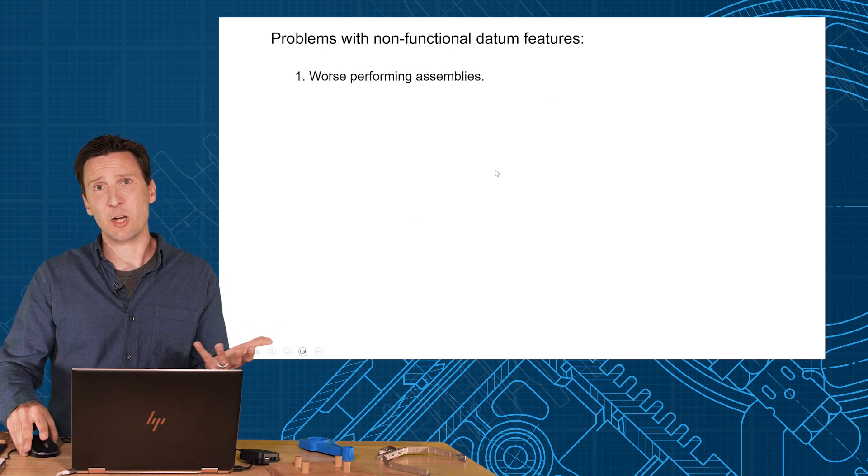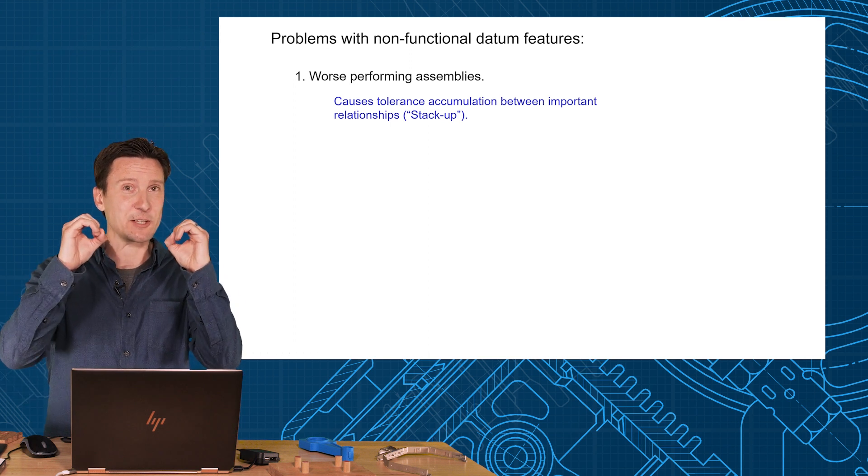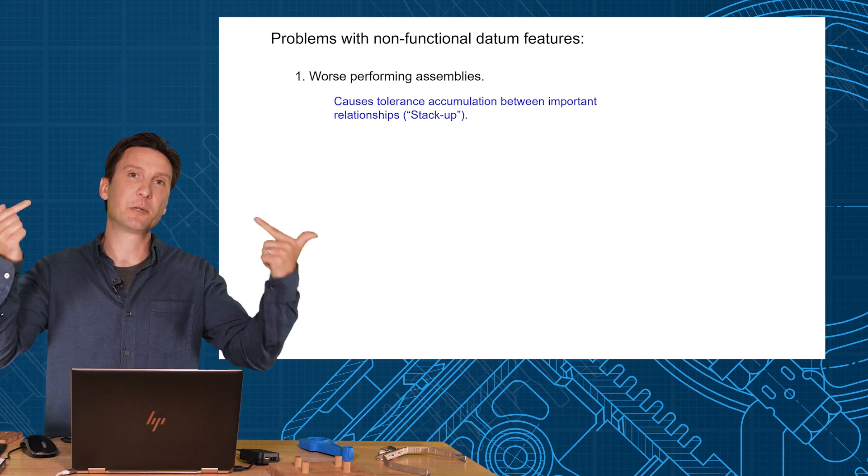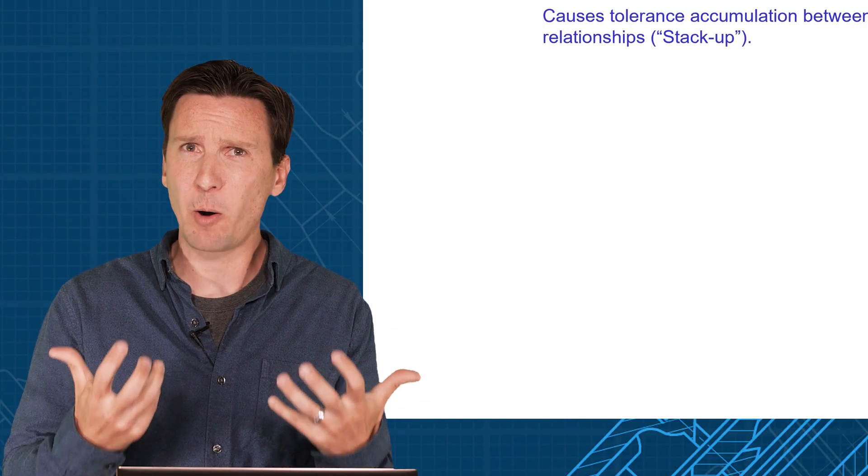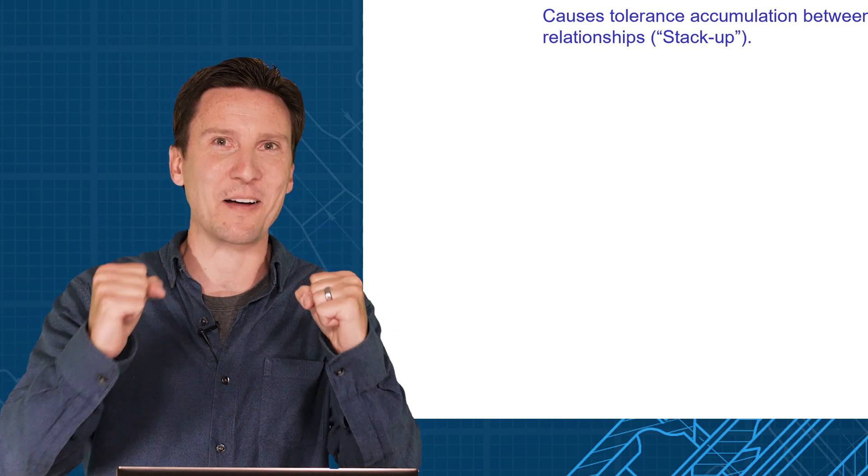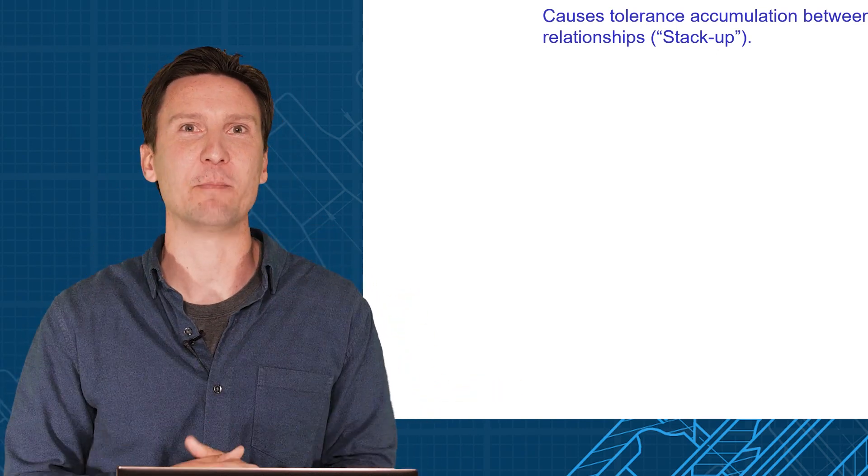You get worse performing assemblies. Remember we talked about stack up issues. If you don't select those functional features as your datum features, they're going to have to have a position tolerance. When they have a position tolerance on them, that causes one extra thing you have to deal with. The best part about a datum feature is you get to zero out on it. Something on your part gets to have no tolerance and I want to pick it as the functional mate to the assembly.